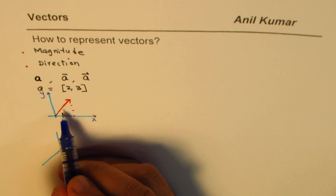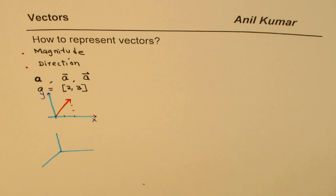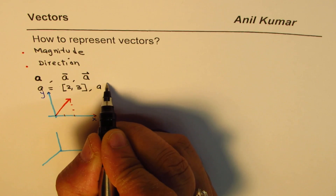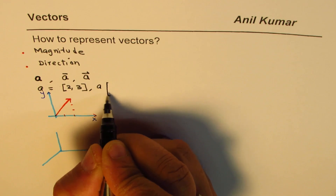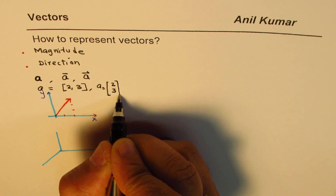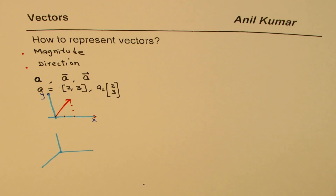This is one way of representing vectors. You can also write vector a as a column: 2 over 3. So it could be represented as a row or as a column — both are valid notations.